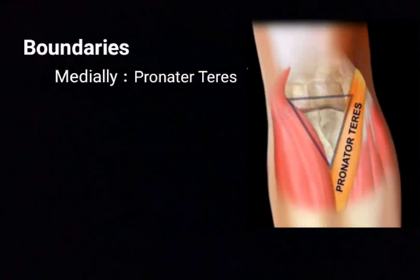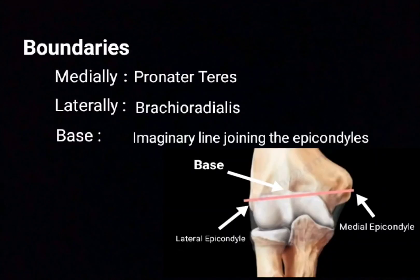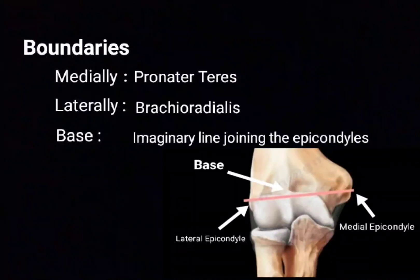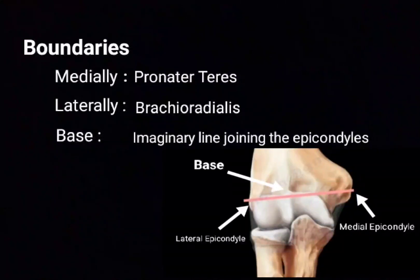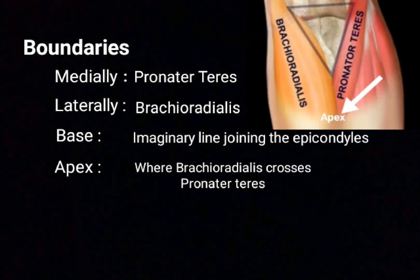Medially there is pronator teres; laterally, brachioradialis. The base, which is directed upward, is formed by the imaginary line joining the two epicondyles — the medial epicondyle and lateral epicondyle. The apex, which is directed downward, is formed where the brachioradialis crosses the pronator teres, as you can see in the diagram.